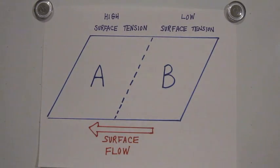When the surface of the liquid is stable and in equilibrium, the surface tension is uniform throughout.